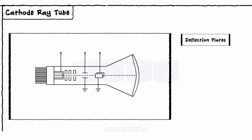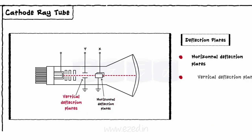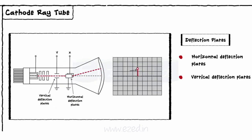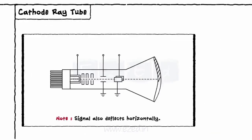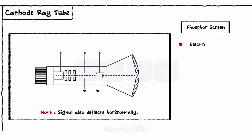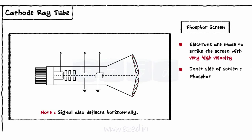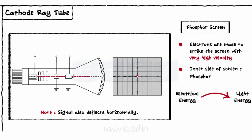The next section is deflection plates. A focused beam with a very high velocity is then passed through X and Y deflection plates. These are horizontal deflection plates and vertical deflection plates respectively. The forces on both plates are controlled such that the waveform will be displayed on the screen. The last section is the phosphor screen. The focused, accelerated, and deflected beam is then made to strike the inside part of the CRO screen with a very high velocity. The inner side of the screen is coated with a special type of phosphor. This layer converts the electrical energy into light energy. Thus, whenever an electron strikes the screen with a very high velocity, it generates a bright spot on the screen and the beam moves so fast that it appears as a waveform.